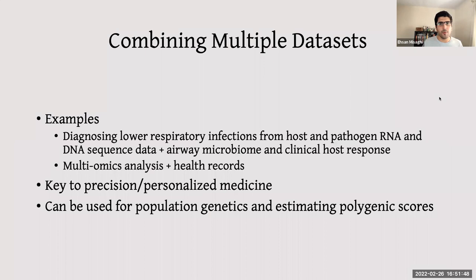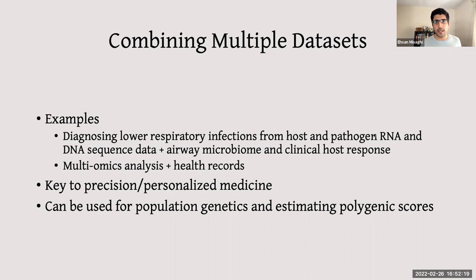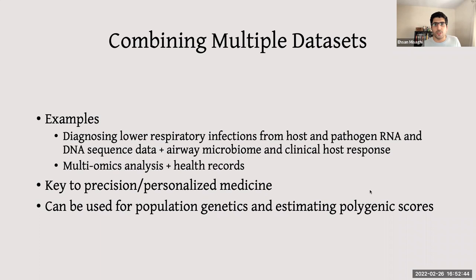Combining multiple datasets is increasingly common. One study on lower respiratory tract infections like pneumonia combined RNA and DNA sequencing from the host and pathogen, airway microbiome data, and clinical host response data into an AI algorithm for diagnosis and prognosis. Multi-omics combined with health records is key to precision and personalized medicine and can also support population genetics and polygenic risk score estimation for complex diseases like Alzheimer's and Parkinson's.